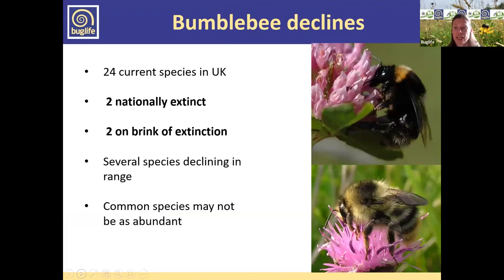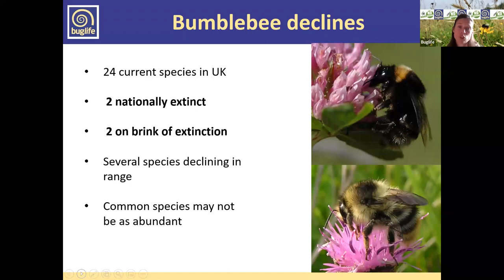Unfortunately there are declines in our bumblebees, as in all our pollinating species. We currently have 24 species in the UK; two have already gone extinct and two are on the brink of extinction. Several species are declining in range, and some common species probably aren't as abundant as they once were. There are some that are expanding — recent colonists for example — but generally a lot of our bumblebees are declining.